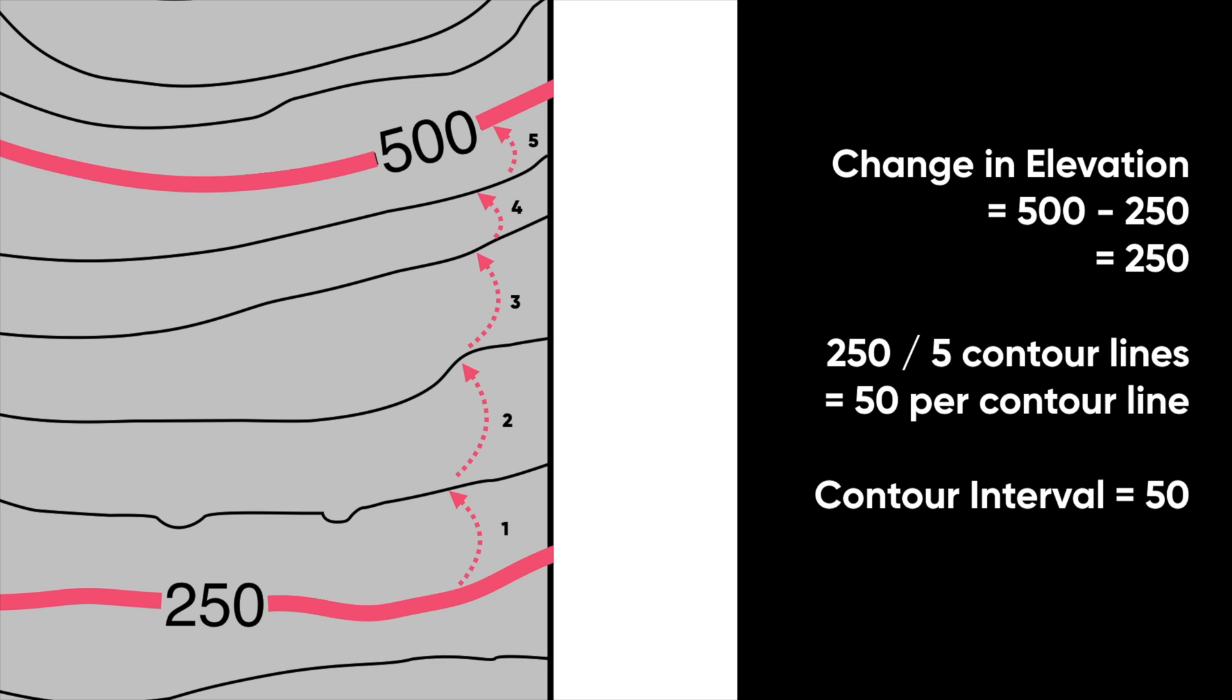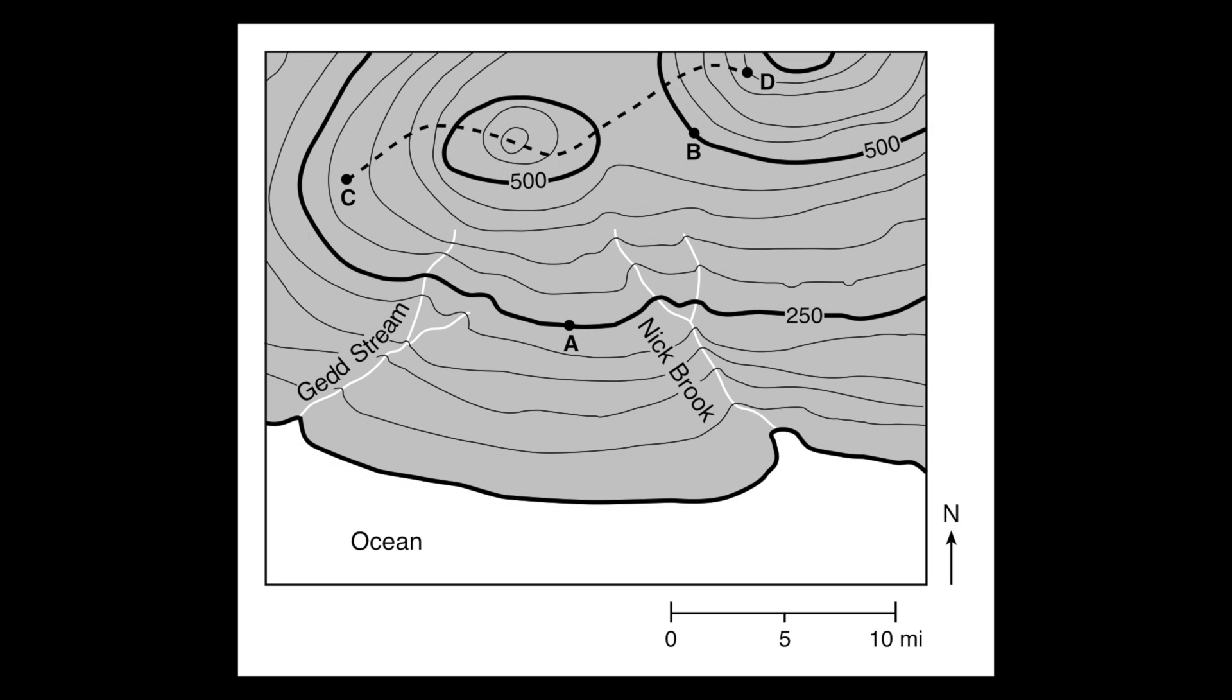Now you'll notice I'm not saying 50 feet, 50 meters. And that's because I have no way of knowing this map is not labeled to tell me what the elevations are measured in. So I'm just going to say 50, or I could say 50 units. So now I know that each line changes in elevation by 50 units.